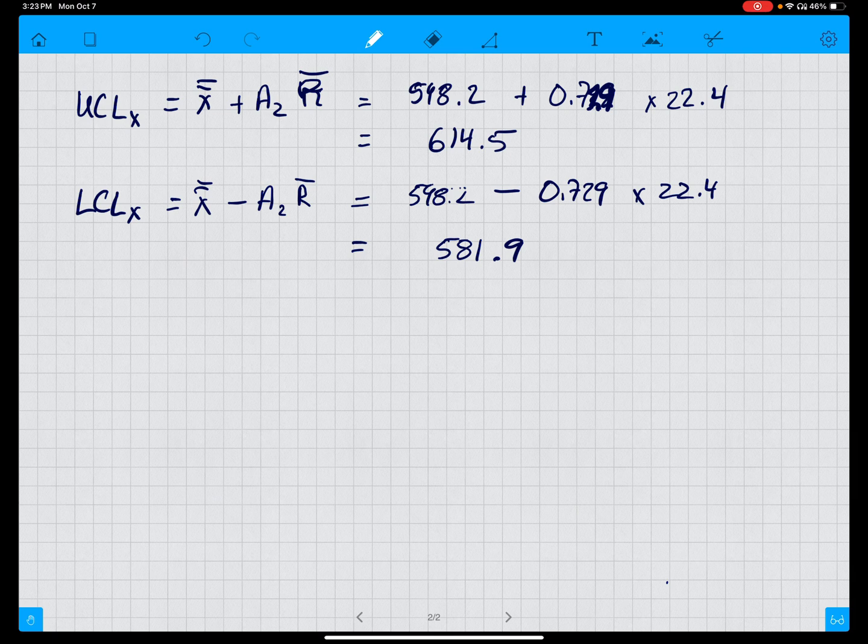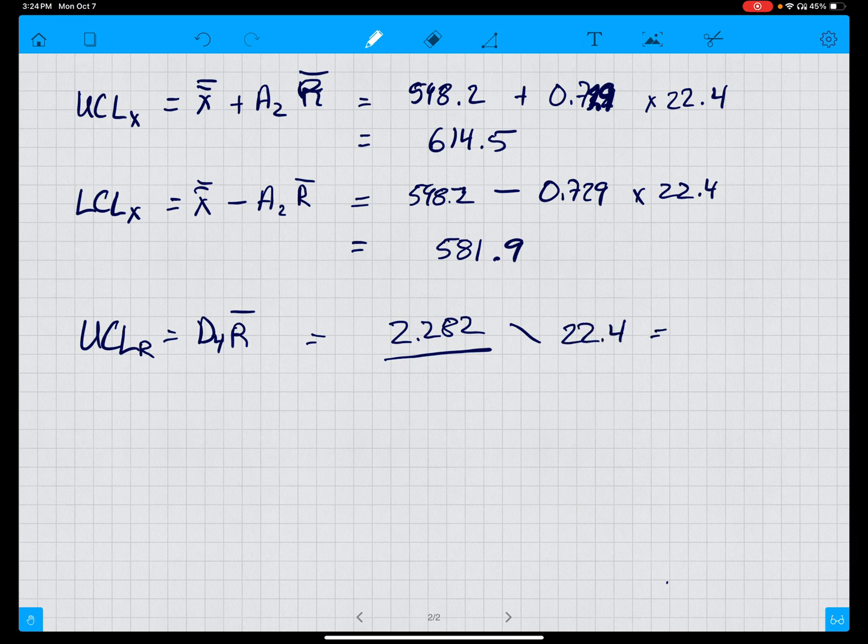This gives us the upper and lower control limits for the mean. We also have to do, because we consider variability as well, upper control limit of R equals D4 times R-bar, equals 2.282 times 22.4, equals 51.2. Lower control limit for R equals D3 times R-bar, which is 0 times 22.4, equals 0.